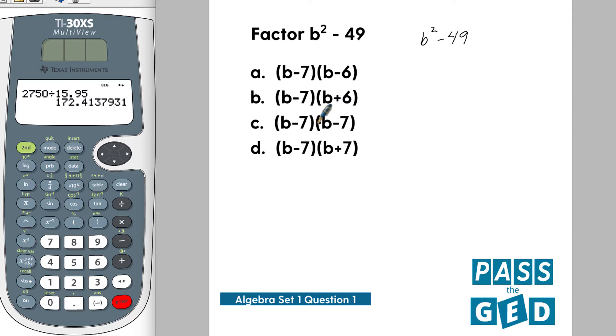This column here is all negative 7s, and this one alternates between negative 6, positive 6, negative 7, positive 7. So you have an option here of narrowing your thinking. You know you're going to have b minus 7 as one of the answers.